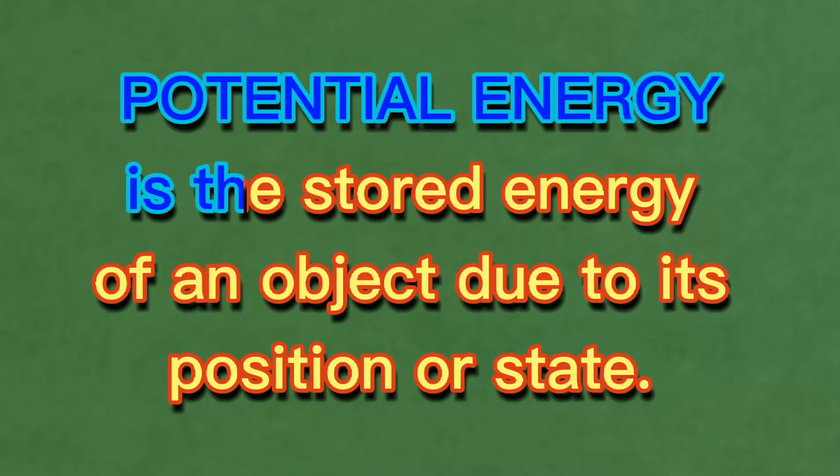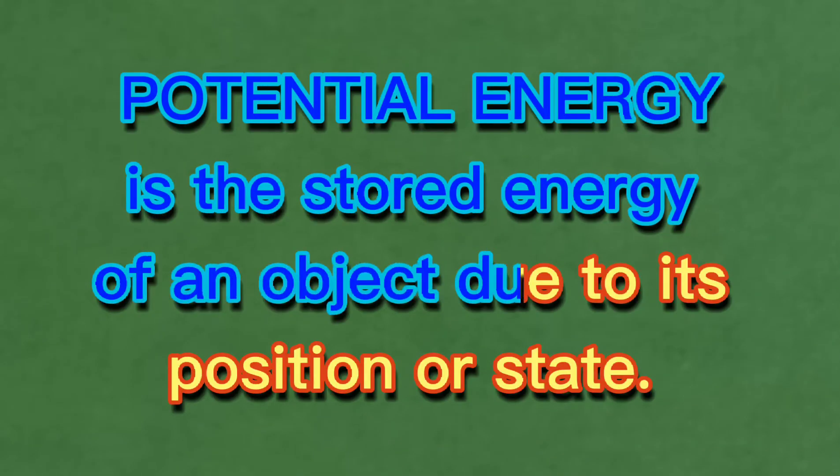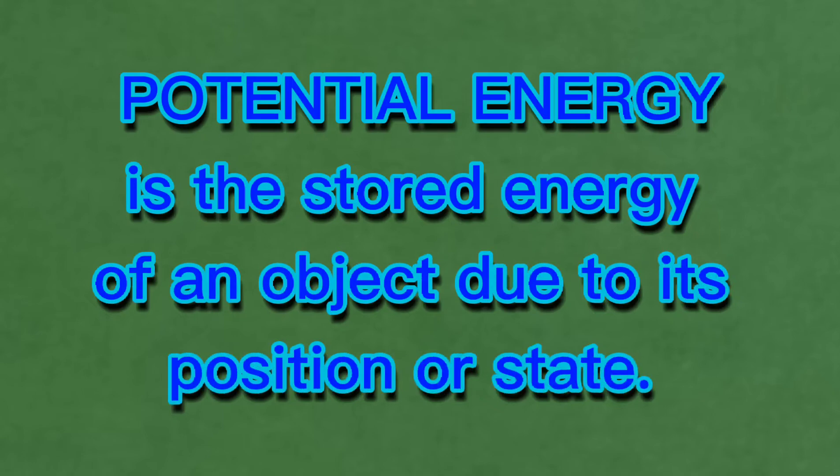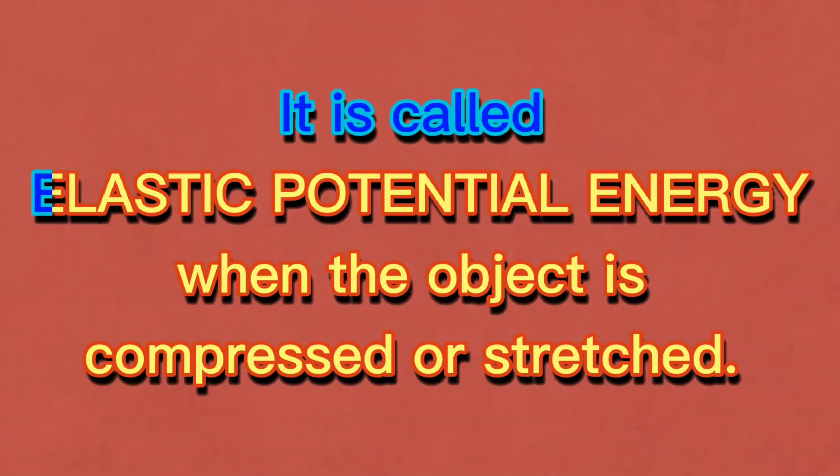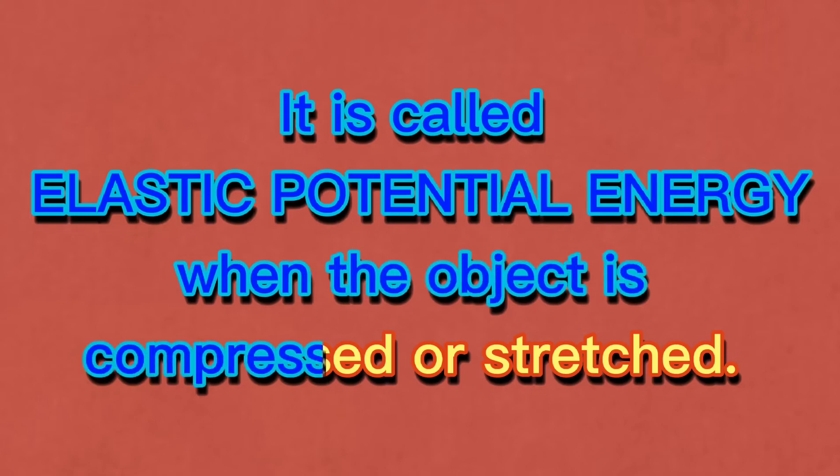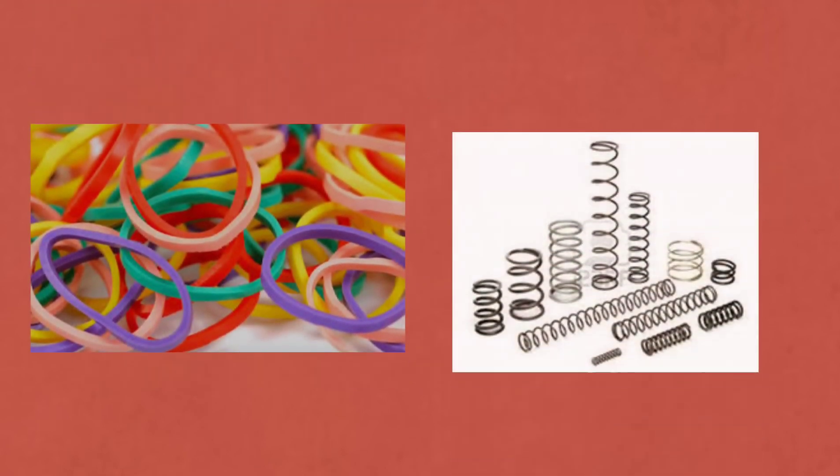The other type of energy is called potential energy. It is the stored energy of an object due to its position or state. It is called elastic potential energy when the state of an object is compressed or stretched, tulad ng mga rubber band and spring.